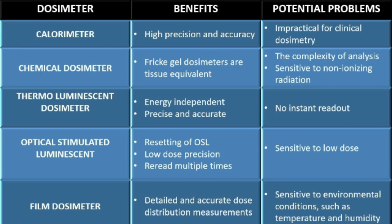Thermoluminescent and optically stimulated luminescent dosimeters are both reusable and energy independent, and can be used as personal dosimeters, but they are unable to give instant readings. Film dosimeters can give accurate dose distribution, but these films are sensitive to environmental conditions including temperature and humidity.